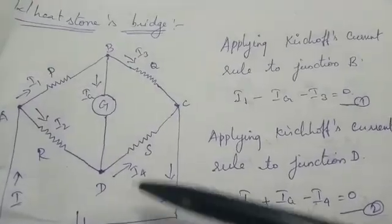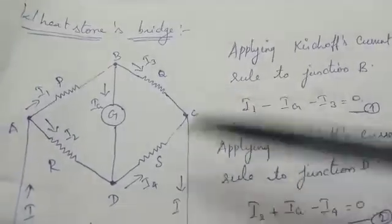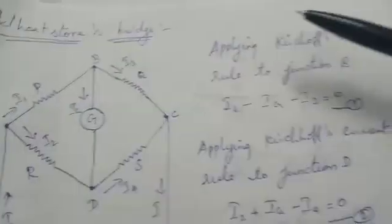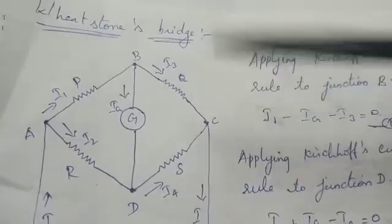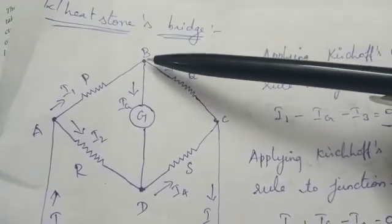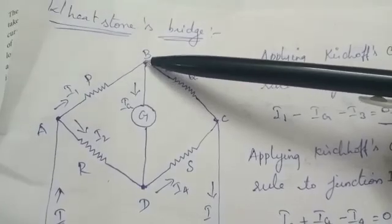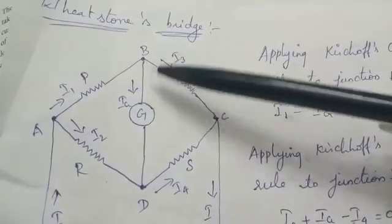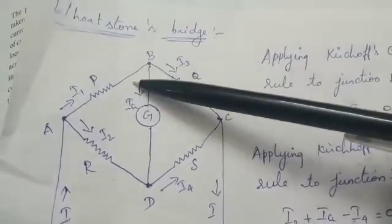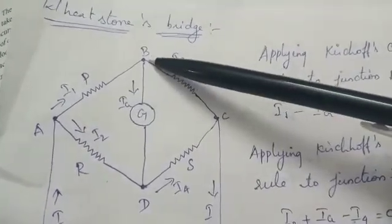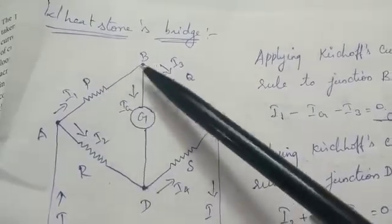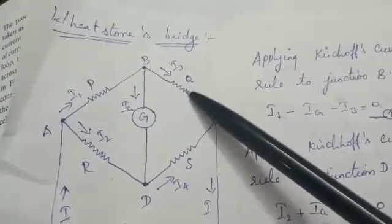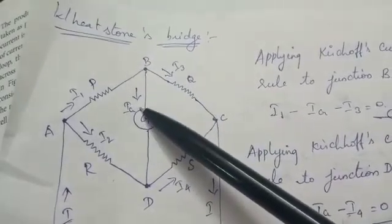Applying Kirchhoff's current rule at junction B: the algebraic sum of all currents at any junction is equal to zero. At terminal B there are three currents. Towards the junction is taken as positive and away from the junction as negative. Here only one value is towards the junction and two values are away. So: I1 − Ig − I3 = 0. That is the first equation.